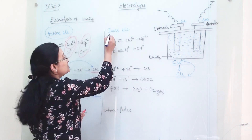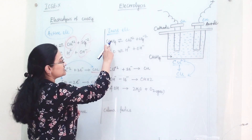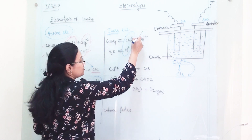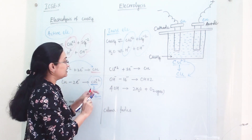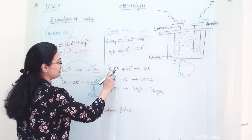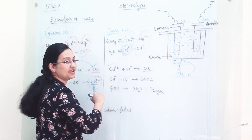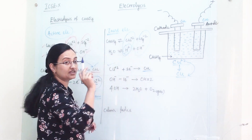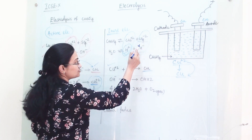Now let us see when an inert electrode is there — when the electrode is not taking part in the reaction. From dissociation, we will get Cu²⁺ and H⁺ at the cathode electrode, whereas SO4²⁻ and OH⁻ at the anode electrode. At the cathode, the reaction remains the same: Cu²⁺ ion will get preferential discharge over H⁺ and we will get copper metal. But at the anode, since the electrode is not taking part in the reaction, we have only the two different ions — SO4²⁻ and OH⁻.